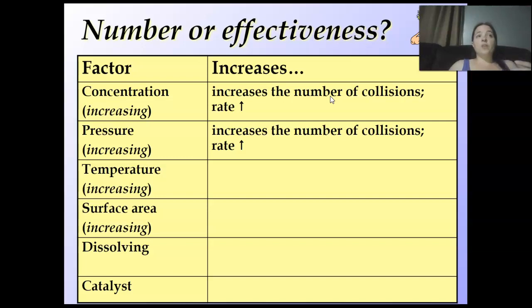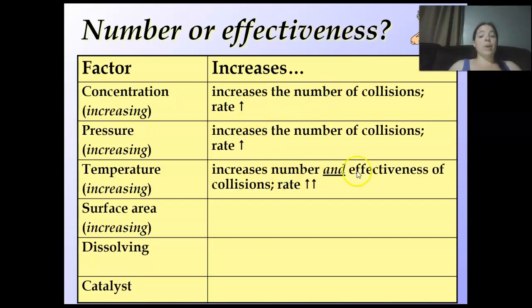Temperature. If I increase that temperature, I'm increasing, they're not going as slow. They start to increase and they hit all over the place. So I increase the number and effectiveness of collisions and I double the rate. These, not so much the effectiveness, but it definitely increases the rate. I double the rate by increasing the temperature.